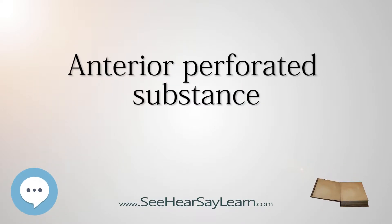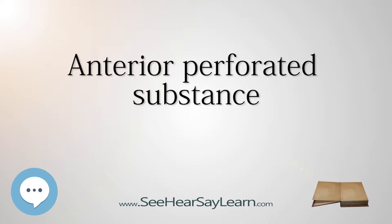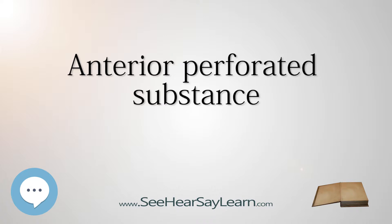The anterior perforated substance is an irregularly quadrilateral area in front of the optic tract and behind the olfactory trigone, from which it is separated by the fissure prima. Medially and in front, it is continuous with the subcallosal gyrus.